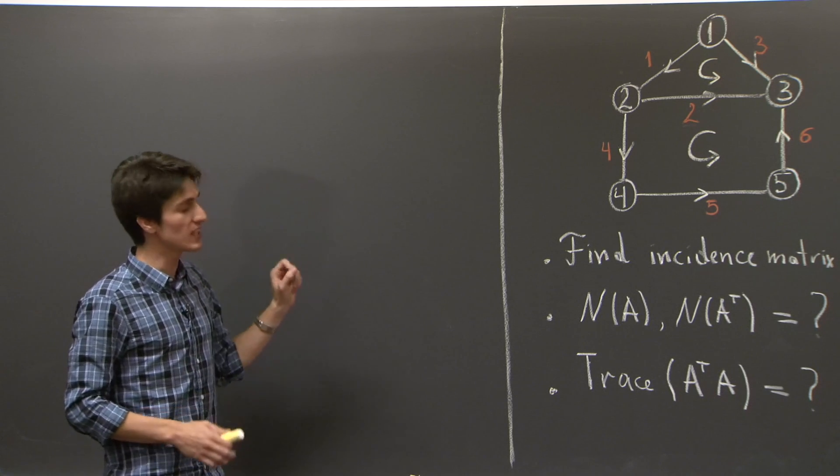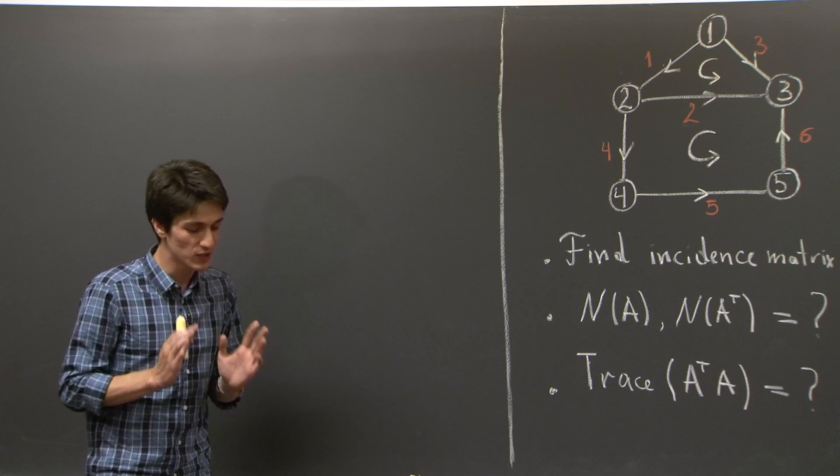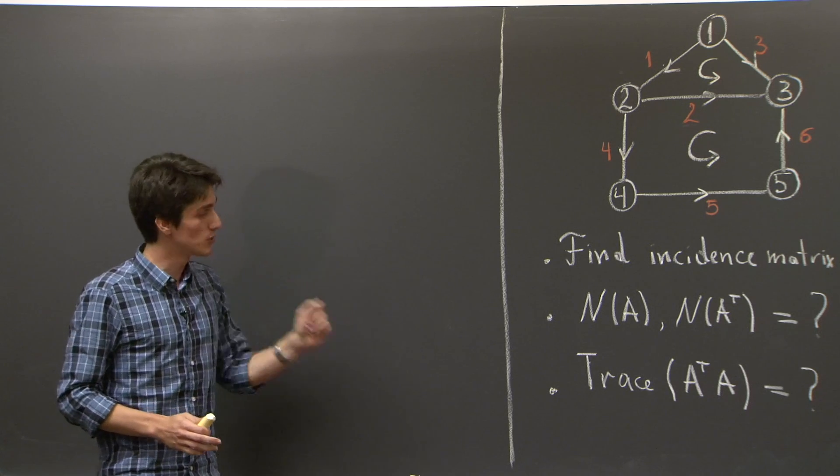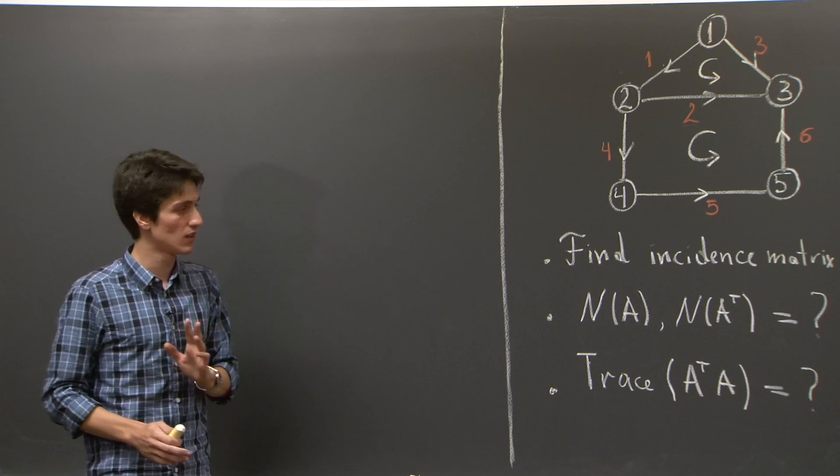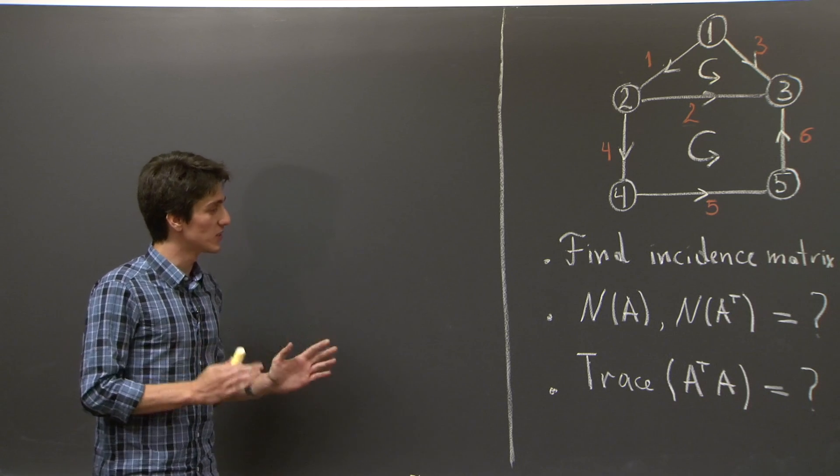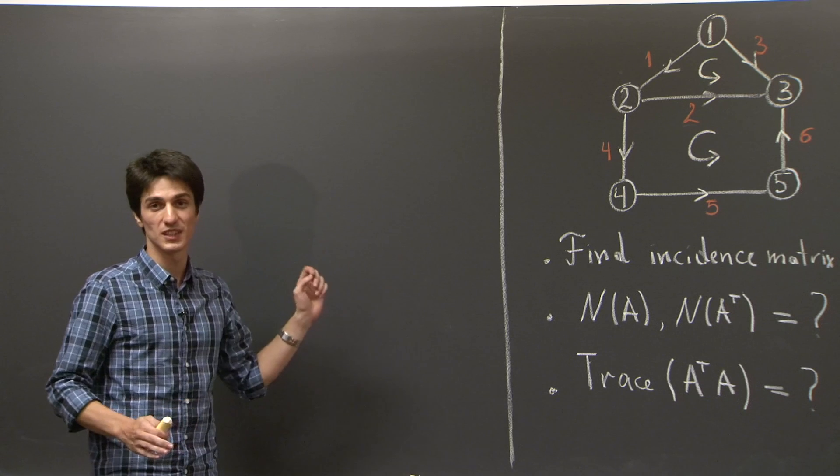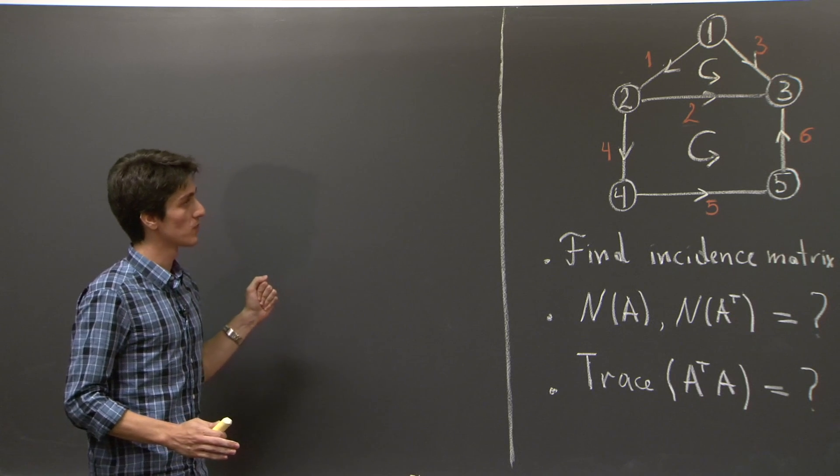that the diagonal entries of A transpose A are precisely the magnitude squared of the columns of A. OK. So, the 1,1 entry is the magnitude squared of the first column. The 2,2 entry is the magnitude squared of the second column, and so on.